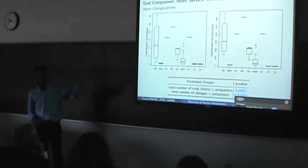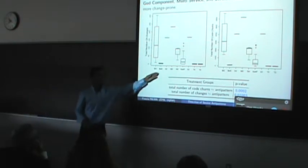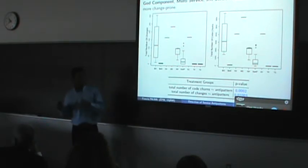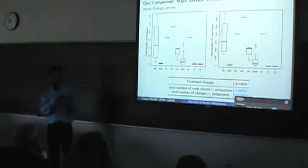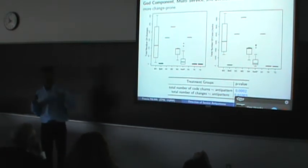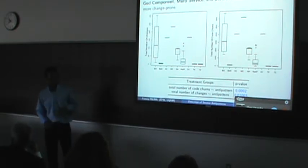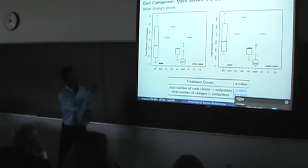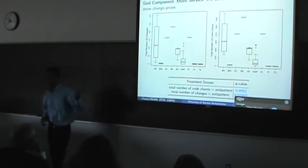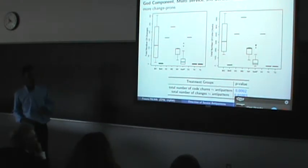This is because God Component is a big component that involves lots of other services, multi-service involves many operations, and service chain is a list of services working together, so if one changes it involves other services. When designers and developers are designing or implementing services, they should take extra care of these three anti-patterns. These differences were confirmed by p-values showing less than 0.01.